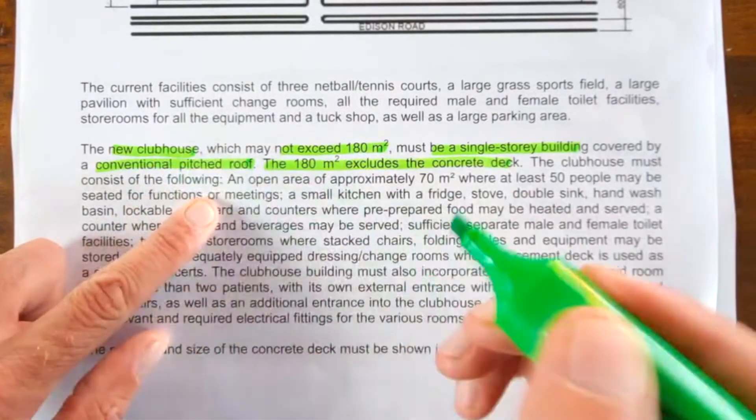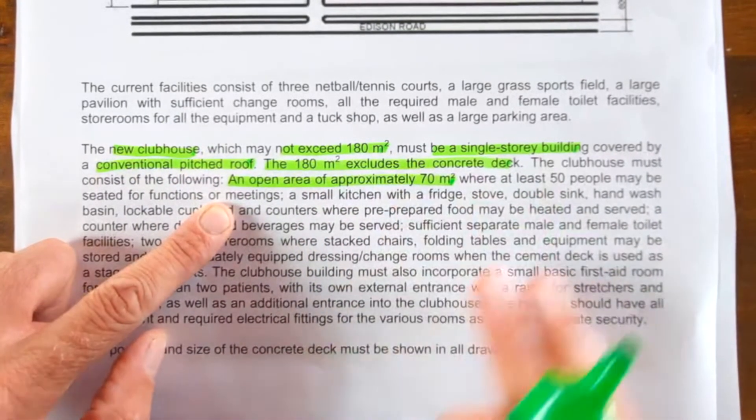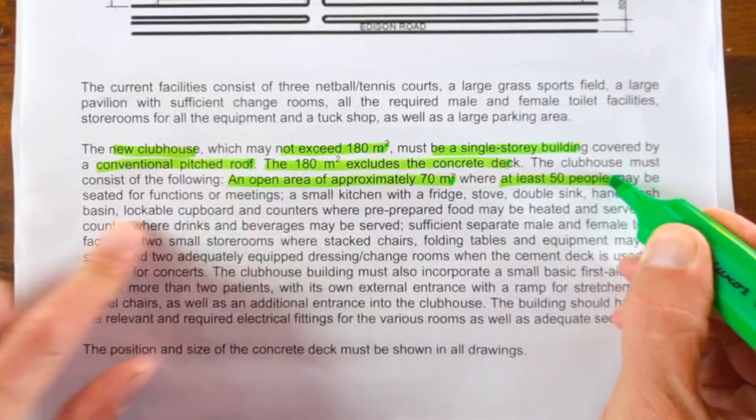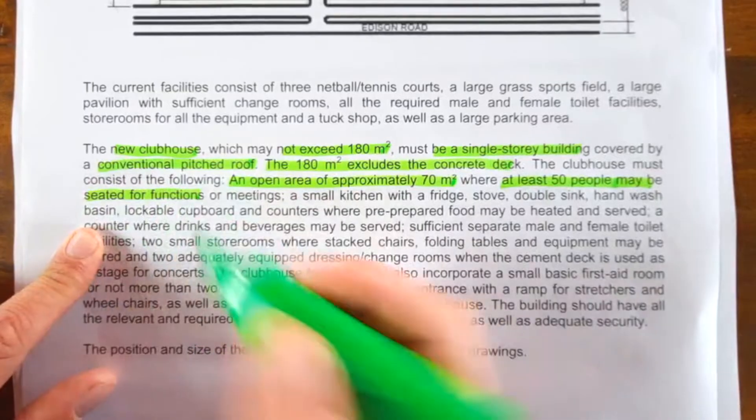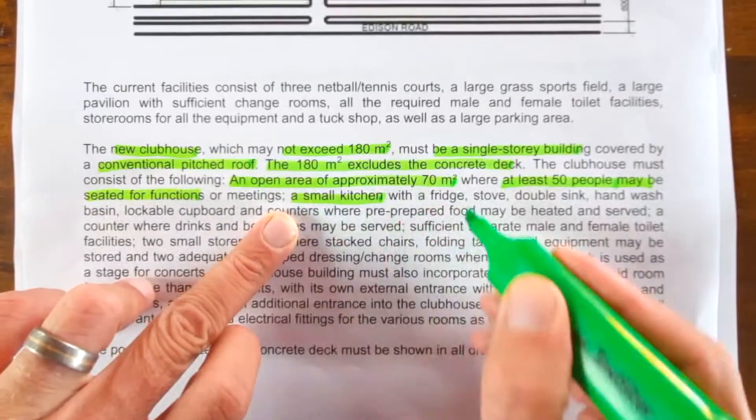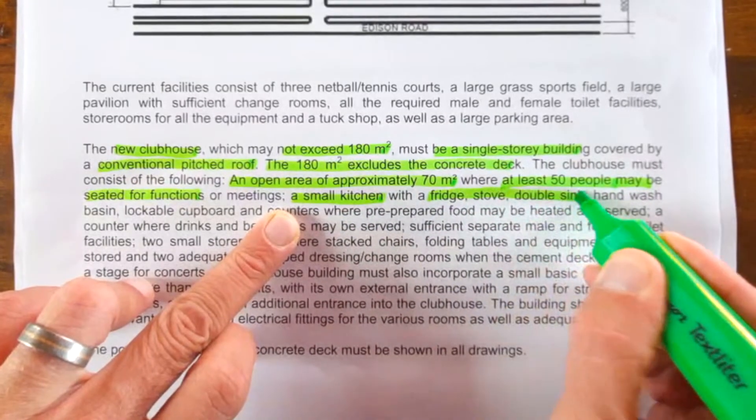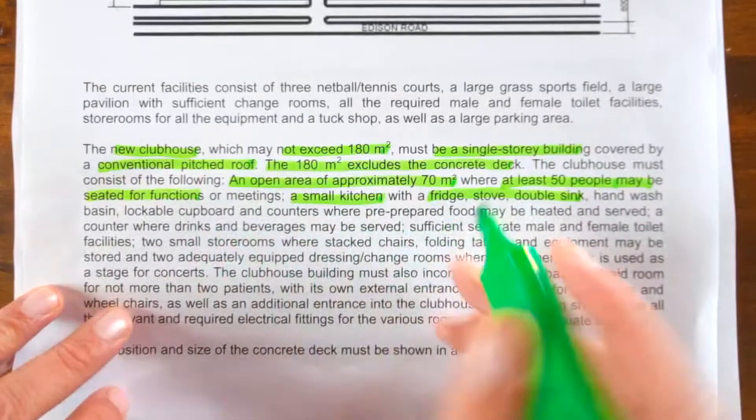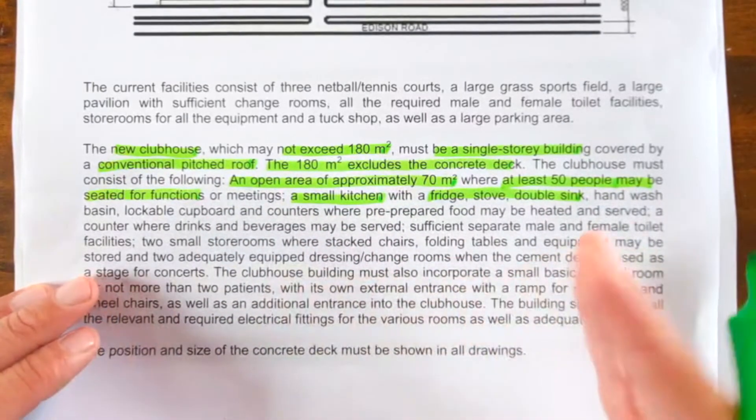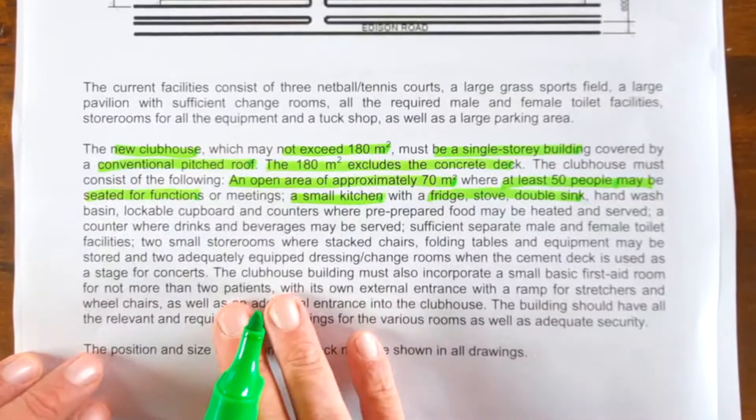The clubhouse must consist of the following. So what must be in the clubhouse? An open area of approximately 70 square meters—specification. Where at least 50 people may be seated for functions—another specification. There must be a small kitchen—specification. What must be in the kitchen? A fridge, stove, double sink, hand wash machine. And so you're going to go through this and highlight every possible specification until you have a good understanding of what the requirements are.